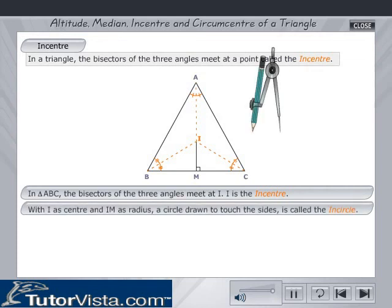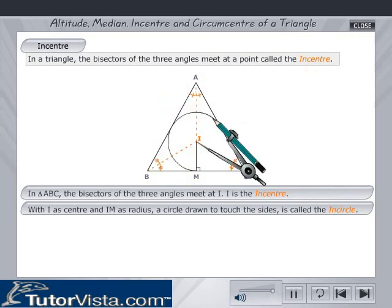With I as center and taking IM as the radius of the compass, draw a circle. Notice that the circle touches the sides of the triangle. This is called the in-circle.